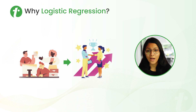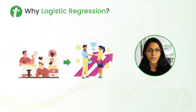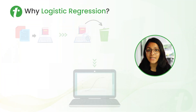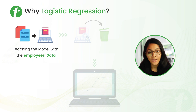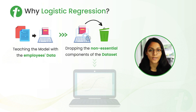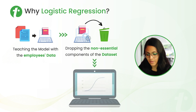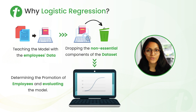Let's first understand why Logistic Regression. Let's take this example: we have some employees, and on the basis of the rating of the employees, we have to determine whether the employee is going to have the promotion or not. We will train the model on employee data. The model will drop the non-essential components of the dataset that are not important for predicting the promotion. This is where we use Logistic Regression — that means in binary classification.